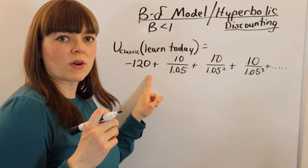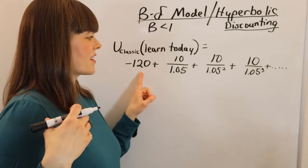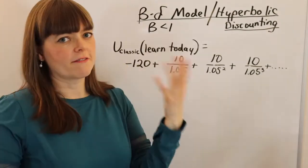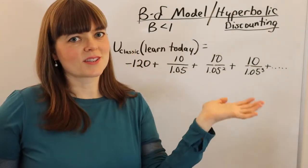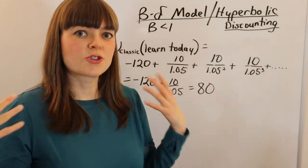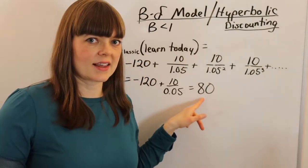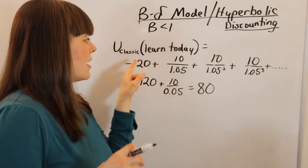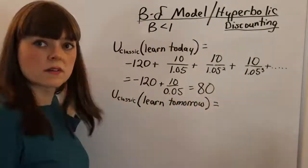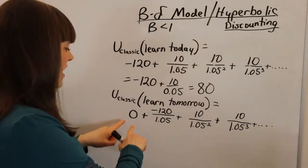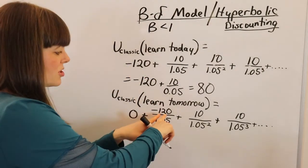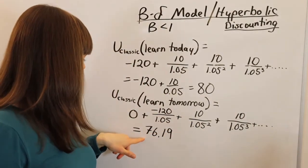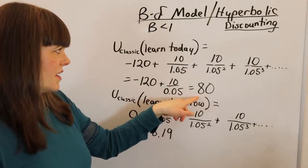Under the classic discounting utility model, we get negative 120 utils from the 120 minutes spent today learning the Excel tricks, but we gain 10 utils every period starting tomorrow and into the future. Discounting at a rate of return of 5%, and using mathematical rules to solve infinite series, your total utility from learning these Excel tricks today is going to be 80. Now if instead of learning these tricks today you pushed the negative 120 utils till tomorrow but then gained the 10 utils every period after that, that gives you a utility of 76.19. So we can see it's better to learn the Excel tricks today.